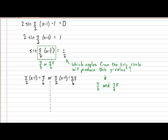Let's first determine the value of x for which the angle will equal to pi over 6. Moving the pi over 2 to the other side of the equal sign will give us that x minus 1 is equal to 2 over 6. And isolating the x will give us a value of 4 over 3. This means that one of the zeros for the sine function will occur at the x value of 4 over 3.